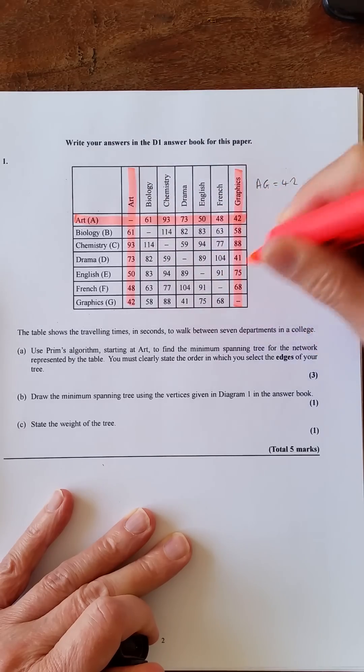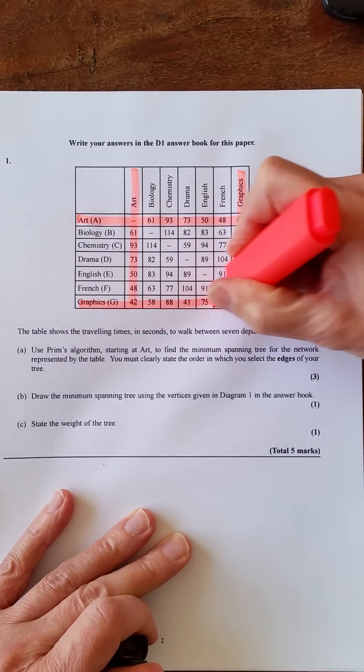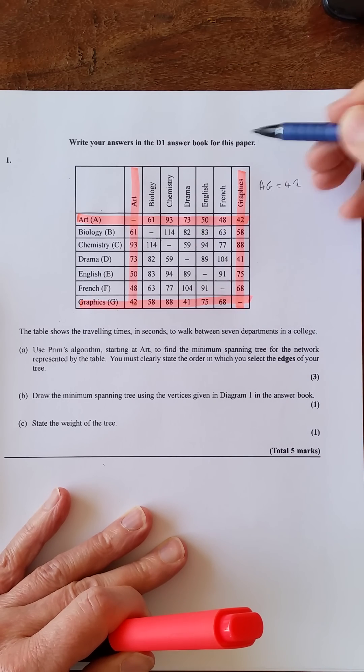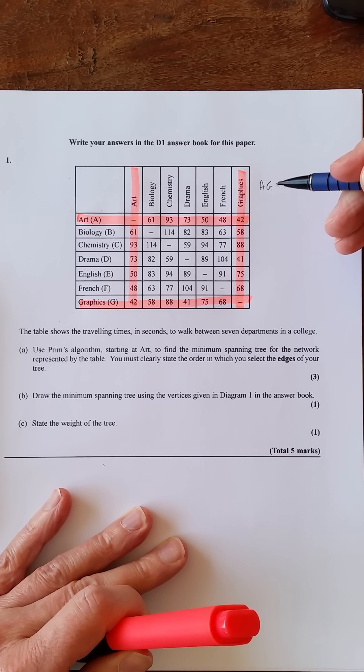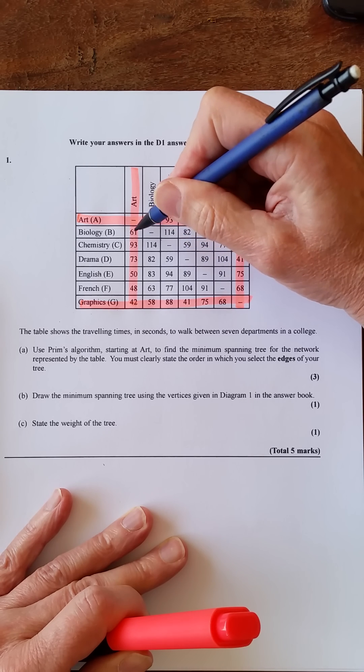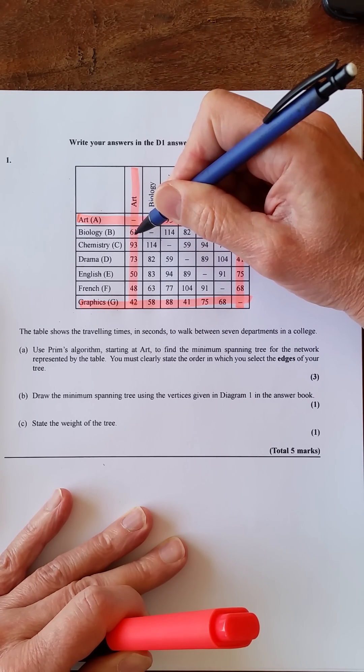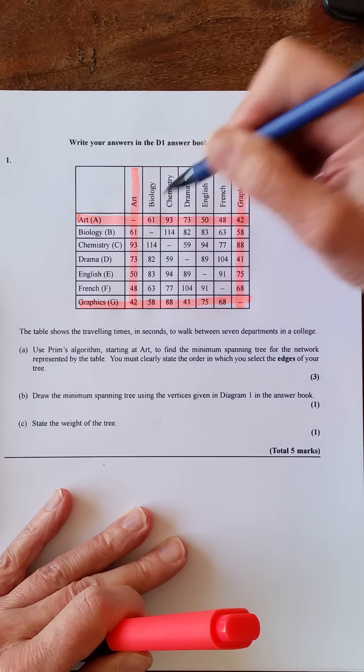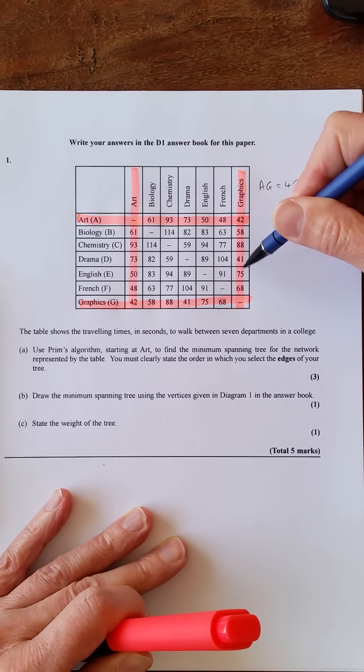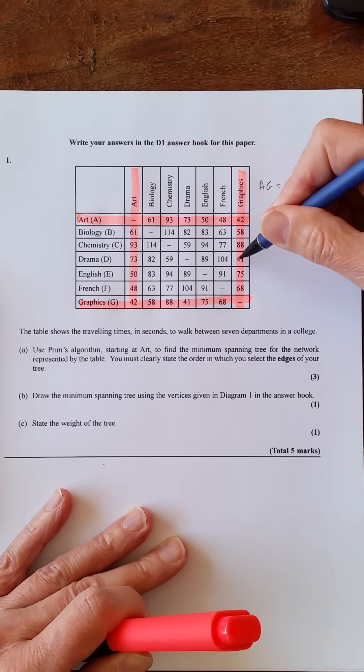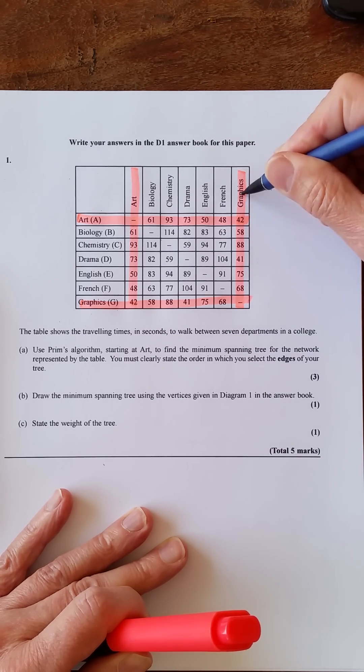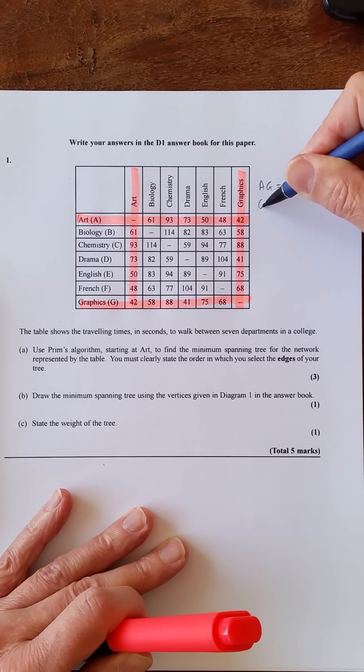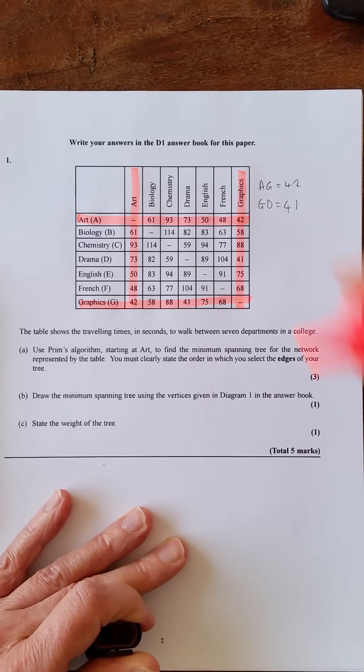So now what we're doing is we're looking down A and G to find the shortest ones that we haven't chosen so far. These are the activities that we've got: 61, 93, 73, 50, 48, and then G here 58, 88, 41, 75, 68. So you can see this one's the shortest, so that's G and D, so GD equals 41.